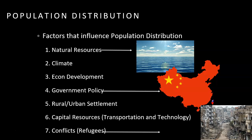Natural resources: people tend to live where they have access to natural resources. Climate is a huge factor in population distribution. If we look at the population of Canada, the majority of Canada's population lives within 100 miles of the U.S. border, and that's because the climate in the southern part of Canada is so much nicer than the climate as you go farther north.